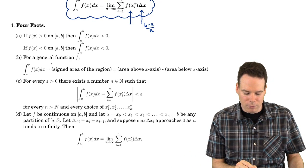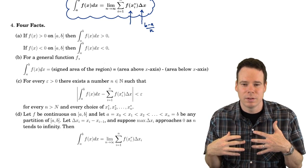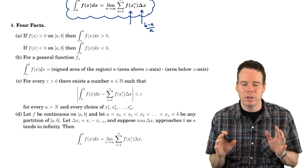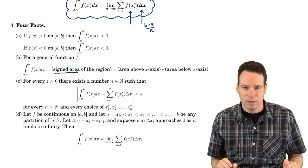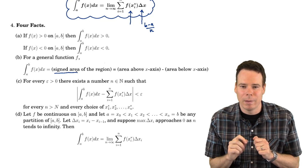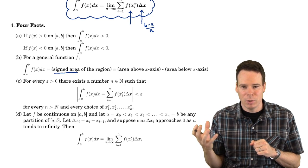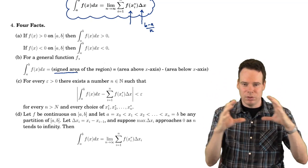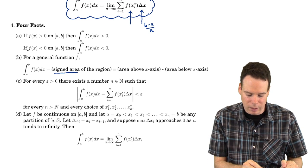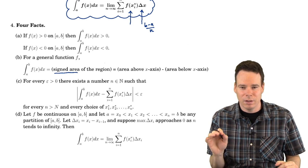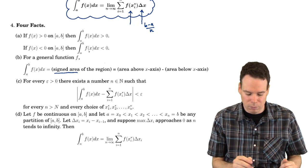For a general function f, the definite integral is not always equal to the area. The definite integral came out of our study of the area problem, but it won't always equal the area. What it equals is the signed area of the region. A quick way to remember why: areas are always positive, but an integral can be negative. If the function is negative, the integral is negative — so the integral is not always equal to area.